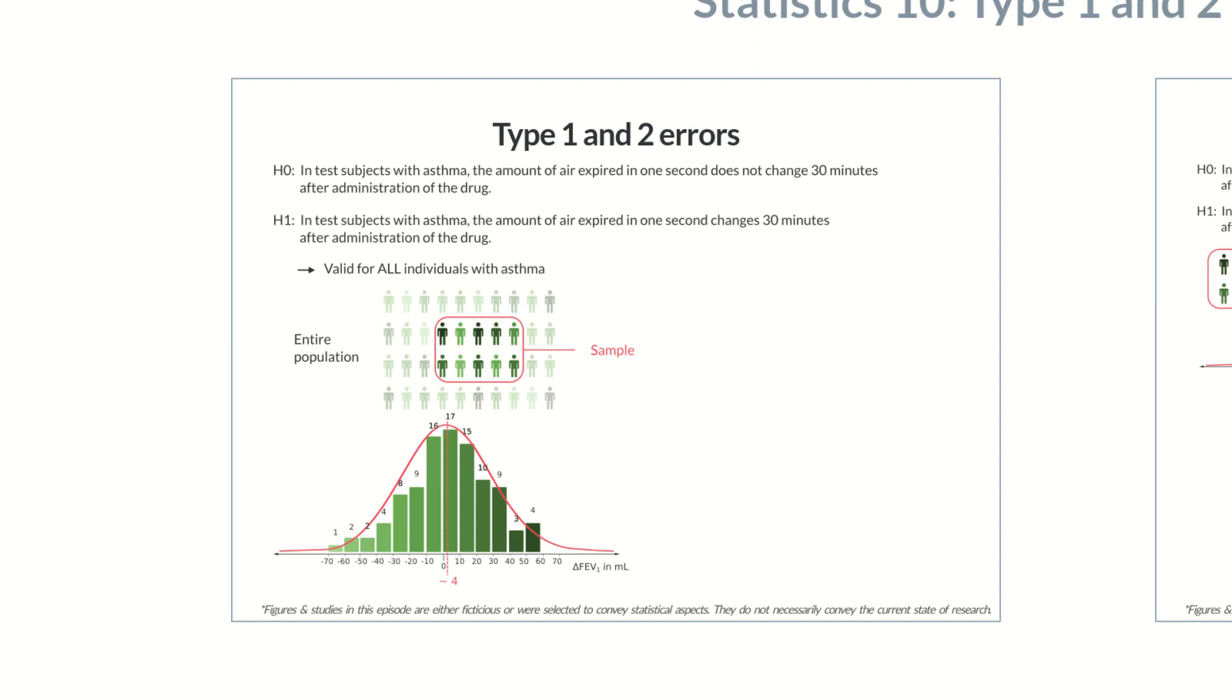This corresponds to less than 1% of the normal tidal volume in adults. Based on this result, can the null hypothesis be rejected in favor of the alternative hypothesis? Can we state that the new drug is effective in patients with asthma? If the study included the entire population of individuals with asthma, then the results would be clear and conclusive despite the small improvement. The null hypothesis could be rejected and the alternative hypothesis accepted.